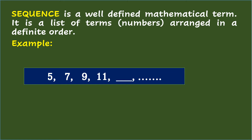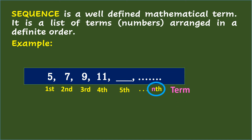In this sequence, there are numbers or terms. 5 is the first term, 7 is the second term, 9 is the third term, 11 is the fourth term, a missing number is the fifth term, and so on as the nth term. This means letter N represents a term or number, and these terms show its value.